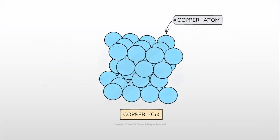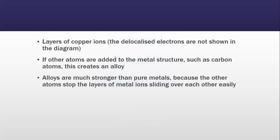Look at this, you can see copper atoms form copper positive ions and they're all surrounded by a sea of delocalized electrons. Layers of copper ions - the delocalized electrons are not shown in the diagram but obviously there are layers of the metal atoms.